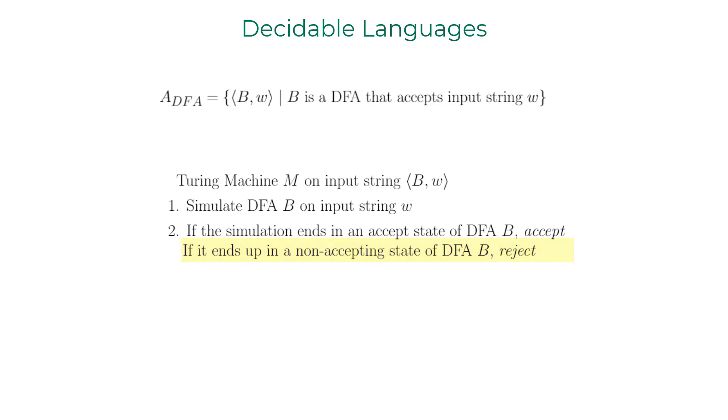For a string of finite length, the finite automaton simulation ends in finite number of steps on the Turing machine. Hence, A_DFA is decidable. So you get a definitive yes or no answer for all the strings that are basically encodings of a DFA and the word that they accept.